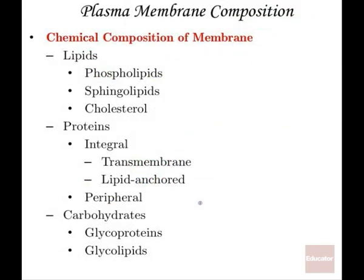What is the chemical composition of the membrane? The membrane is composed of three groups of molecules: the lipids, the proteins, and the carbohydrates. Most of the membrane is composed of lipid. These lipids are lipids attached to phosphates, sphingolipids, and cholesterol. There are also various types of protein embedded in the membrane. There's the integral protein that travels through the membrane from the outside to the inside of the cell, and some proteins are actually anchored to lipids.